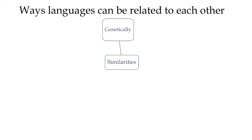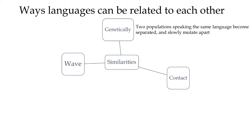One is the genetic explanation, and this is sort of thinking of languages in terms of biological organisms. There's a contact explanation, and there's a wave explanation. With the genetic one: sometimes languages evolve into two or more daughter languages from the same population. Usually this happens when two groups of people speak the same language but become separate, and then the languages slowly mutate over time the same way that biological organisms mutate.